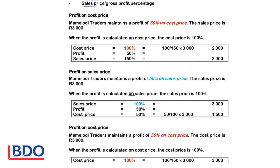Monolori Traders maintains a profit of 50% on cost price. That means the cost price equals 100%, the profit is 50%, so the sales price must then be 150%. The sales price is given as R3000, so next to the 150%, you will record the 3000. If we want to calculate the cost price, we will take the percentage we want — 100% — divide by the percentage that we know — 150 — times 3000, and that will give me the cost price as R2000.